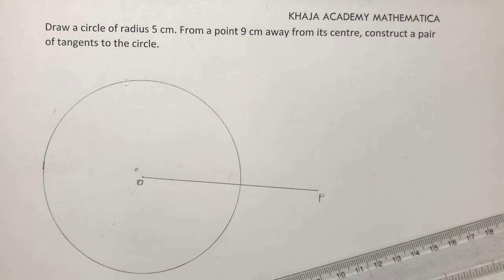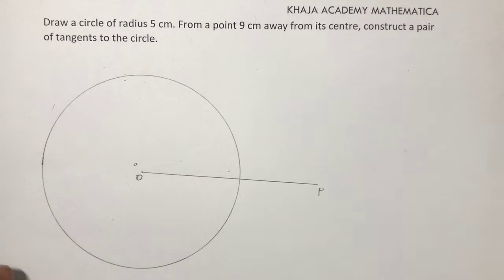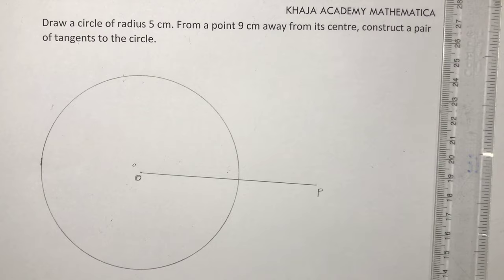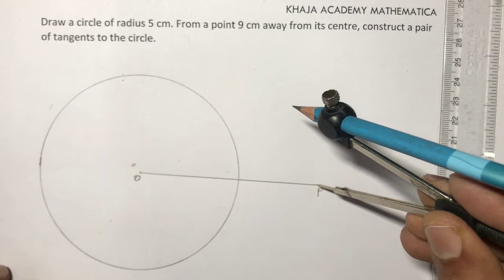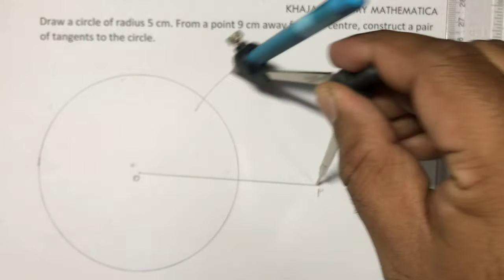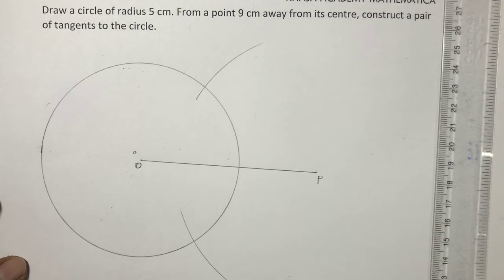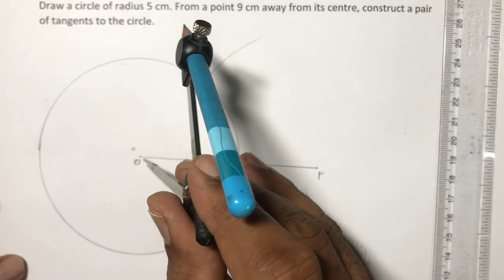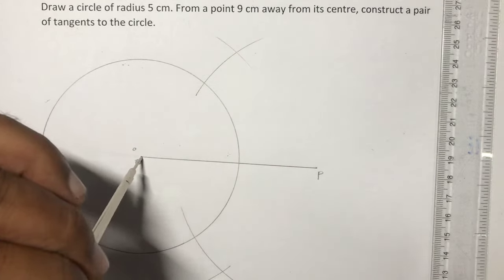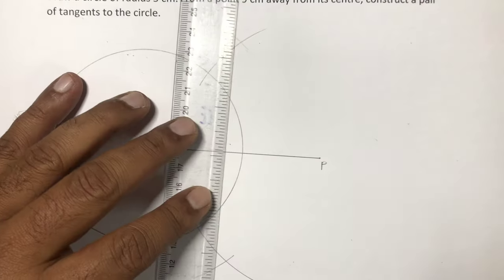Now to draw the tangent from this point, I'll draw perpendicular bisector for OP. So what I'll do, I'll take more than half. I'll draw two arcs from P and from O. From center O I'll draw two more arcs so that it cuts the previous arcs. This is the perpendicular bisector.